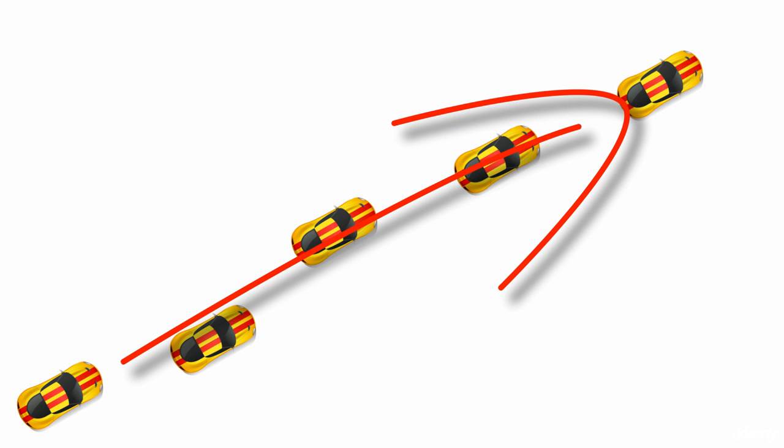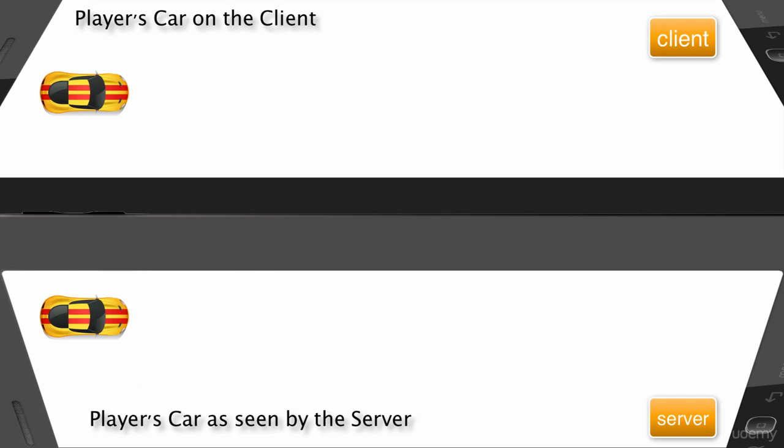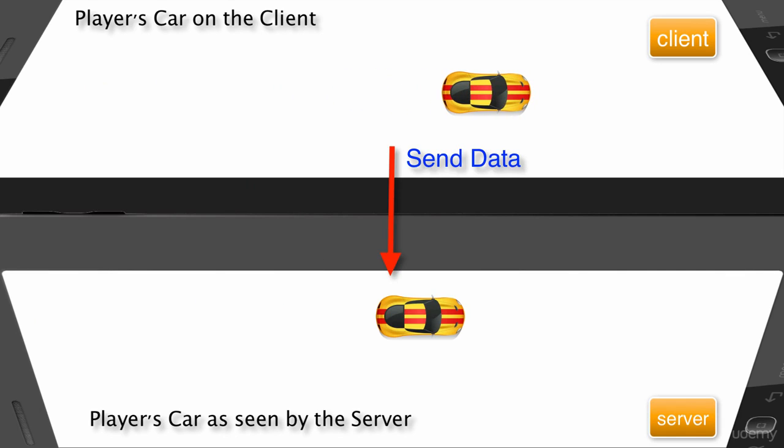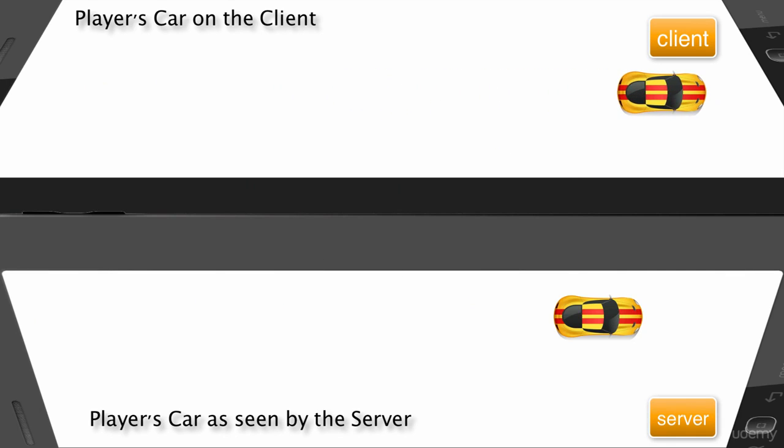You will have interpolated its position and this is how messages between computers get sent. At discrete intervals the client sends transformed data to the server. The server sends this information to the other clients who update the known position of the car.